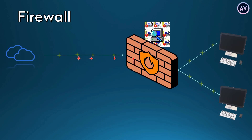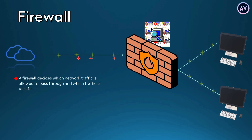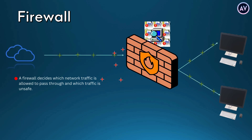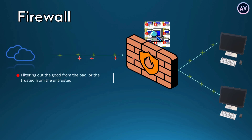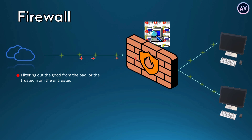So how do firewalls work? A firewall decides which network traffic is allowed to pass through and which traffic is unsafe. Essentially, it works by filtering out the good from the bad, or the trusted from the untrusted.